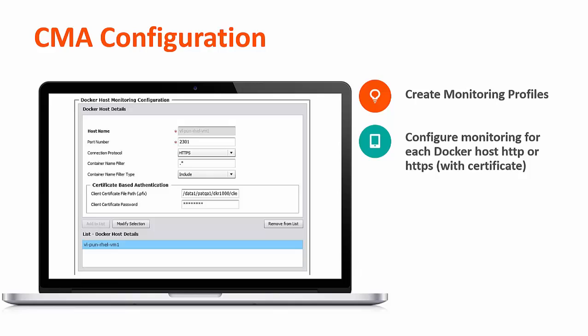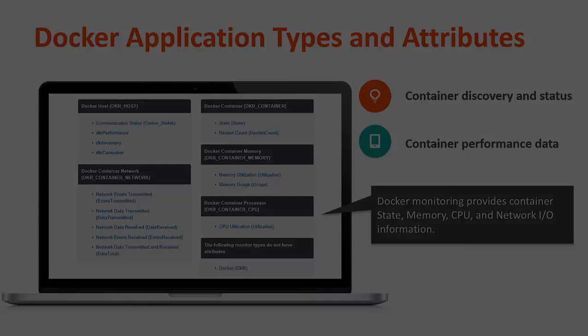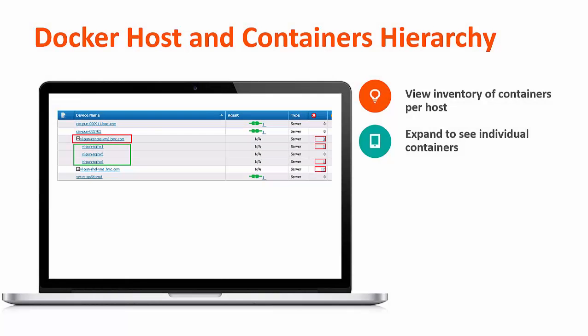Here's an example of how you configure it in the console. You just need to have the username, password, port, and then if you're doing HTTPS, your certificate information. Once you have that configured, you can then begin monitoring and seeing this kind of data — application types and attributes. You can see the container status, if a container is up or down, the memory running in each container, and then be able to act when resources become overloaded.